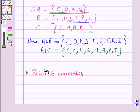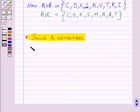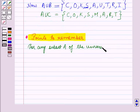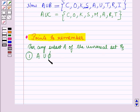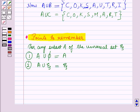There are some points that we should remember while dealing with the union of sets. For any subset A of the universal set Ξ: first, A union the empty set φ is equal to A; second, A union the universal set Ξ is equal to Ξ; and third, A union A is equal to A.